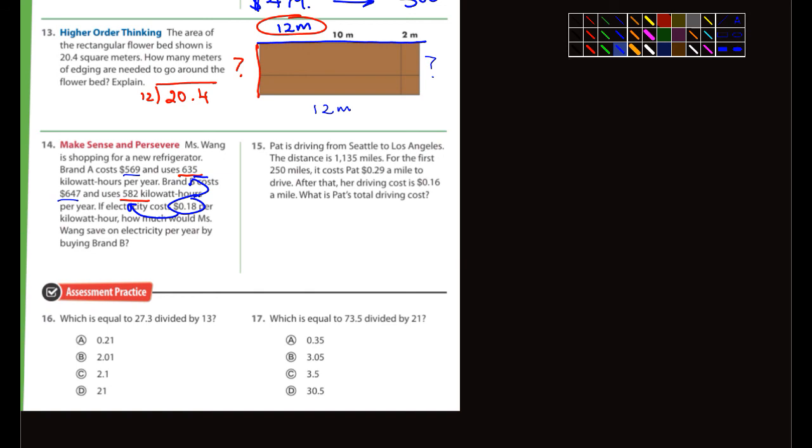Pat is driving from Seattle to LA, distance is 1,135 miles. For the first 250 miles it costs 29 cents a mile. After that, driving costs 16 cents a mile. What is Pat's total driving cost? I want you guys to do these on your own. How would you do this one? I'm not going to touch 15, I want you guys to figure that out. Okay, that's it, done with this video.